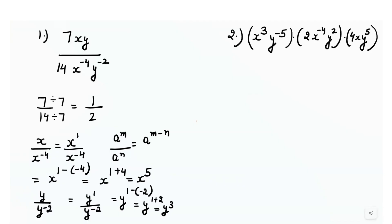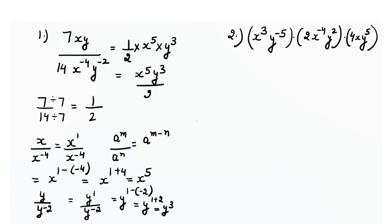We have already solved all values in the expression. 7 over 14 gave us 1 by 2. For the variable x we got x raised to power 5, and for y we got y raised to power 3. So the final answer is x raised to power 5, y raised to power 3, over 2. That is how we solve the exponents.